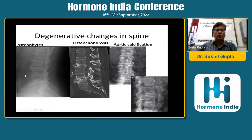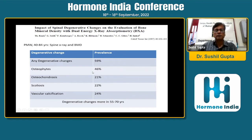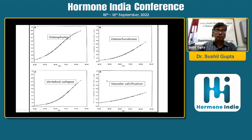There could also be degenerative changes in the spine — osteophytes, osteochondrosis, and aortic calcification, which is pretty common in elderly women. A study of postmenopausal women aged 40 to 84 years showed any degenerative change present in almost 60%, osteophytes in 46%, osteochondrosis in 21%, scoliosis in 22%, and vascular calcification in 24%. These degenerative changes become more prevalent after age 55-60 years. As age increases, the prevalence of osteophytes, osteochondrosis, vertebral collapse, and vascular calcification also increases.